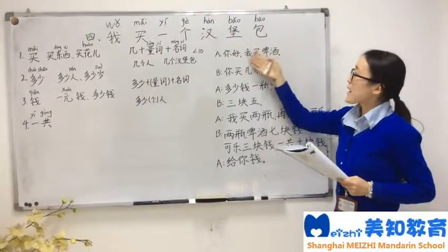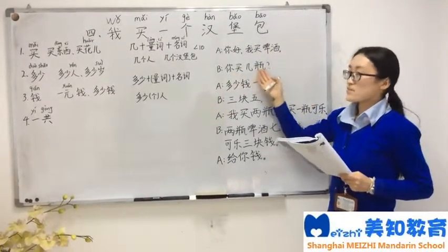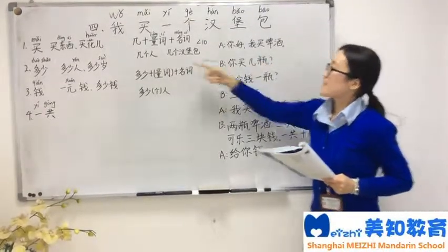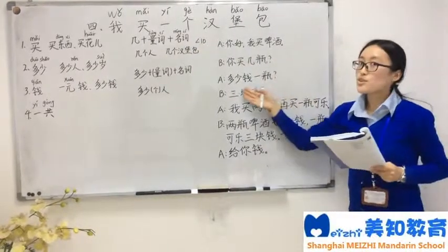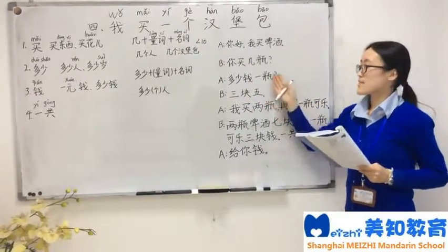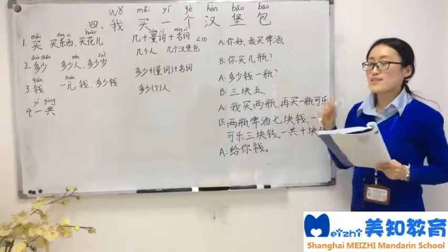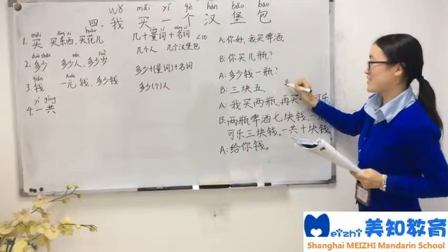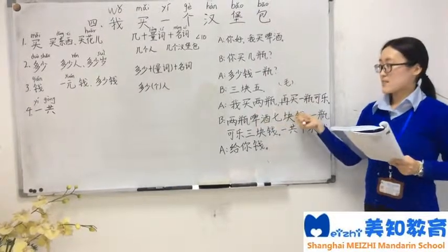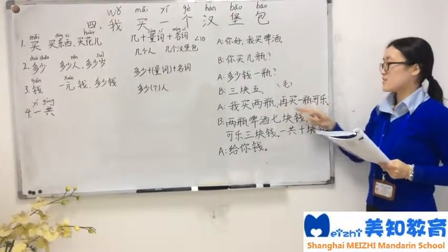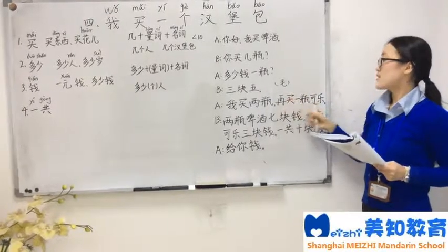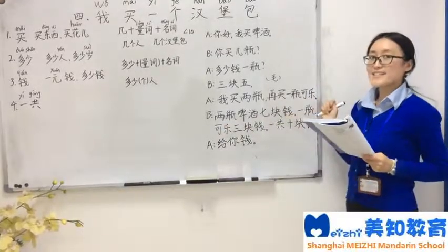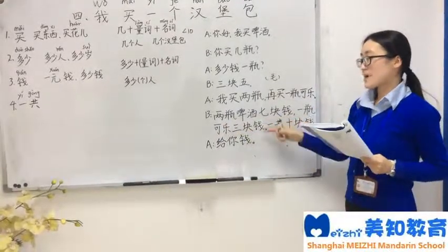你好，我买啤酒. The salesman will ask you 你买几瓶? 多少钱一瓶? How much? 三块五. You can also say 三块五毛. 我买两瓶，再买一瓶可乐. 再 means 'also' or 'additionally'. 两瓶啤酒七块钱，一瓶可乐三块钱.